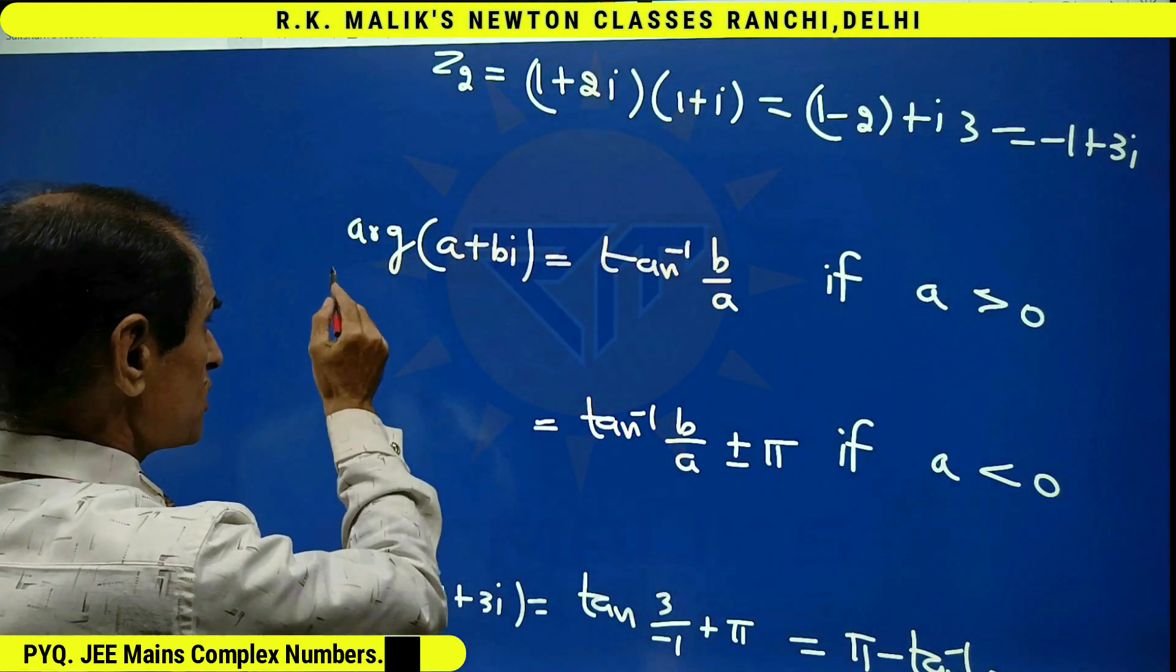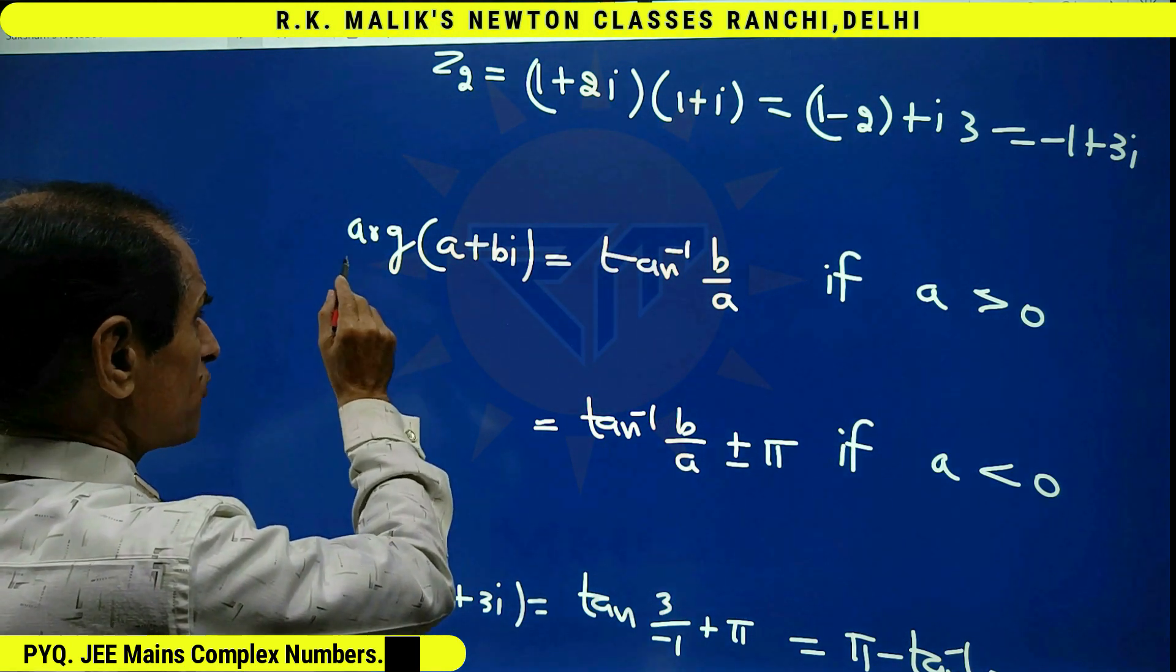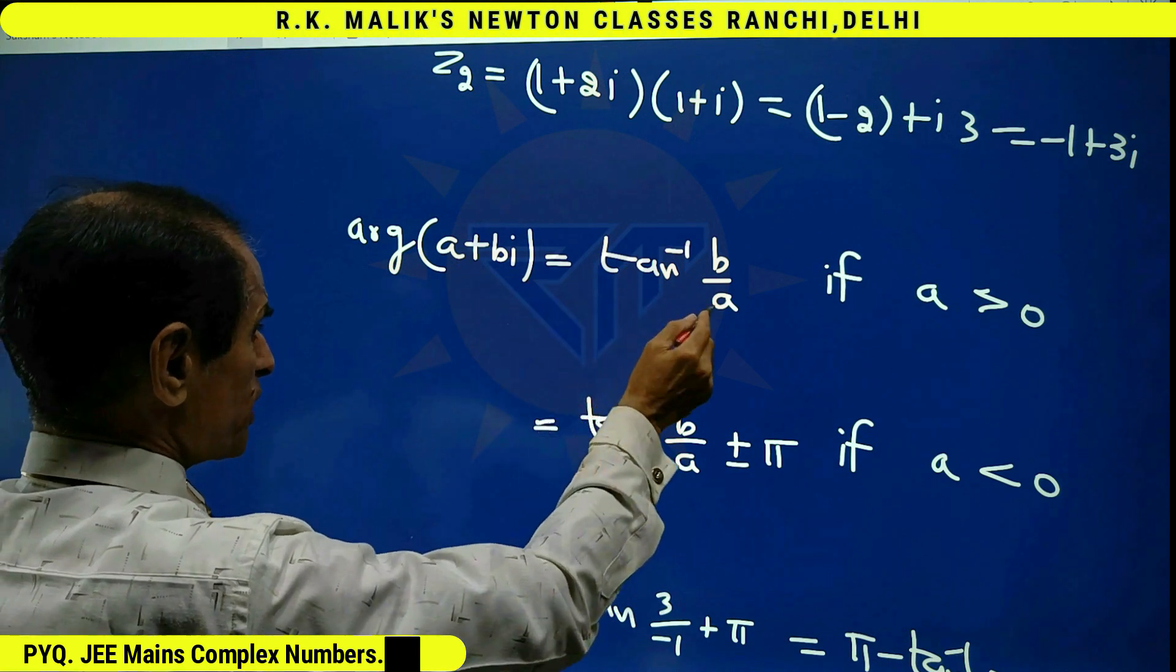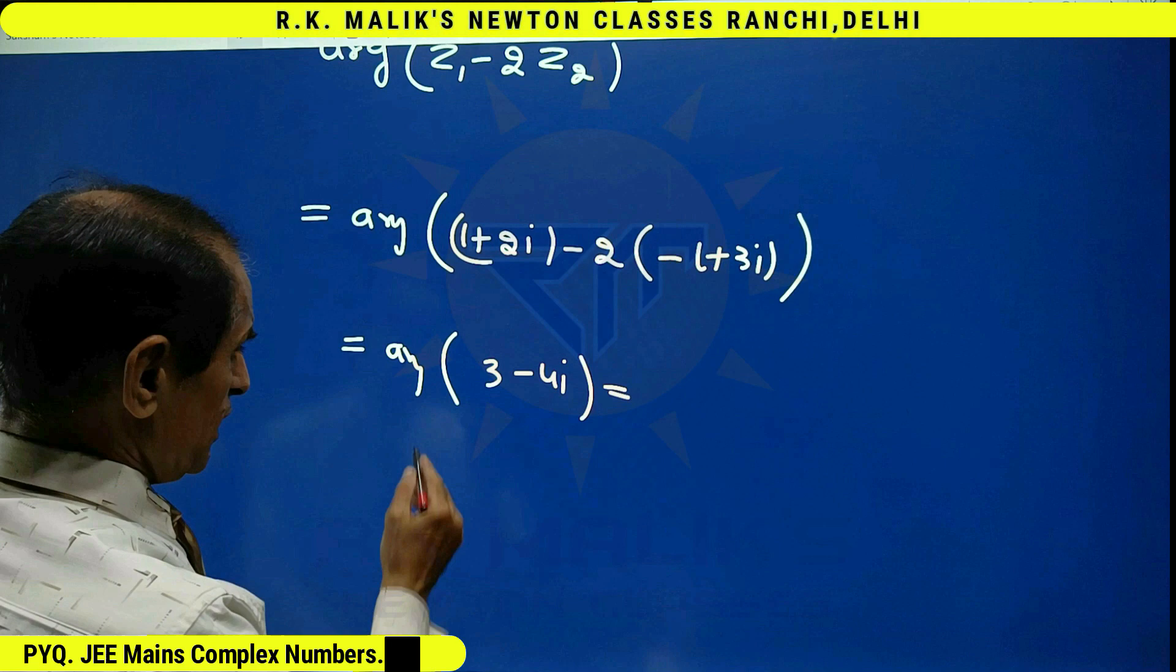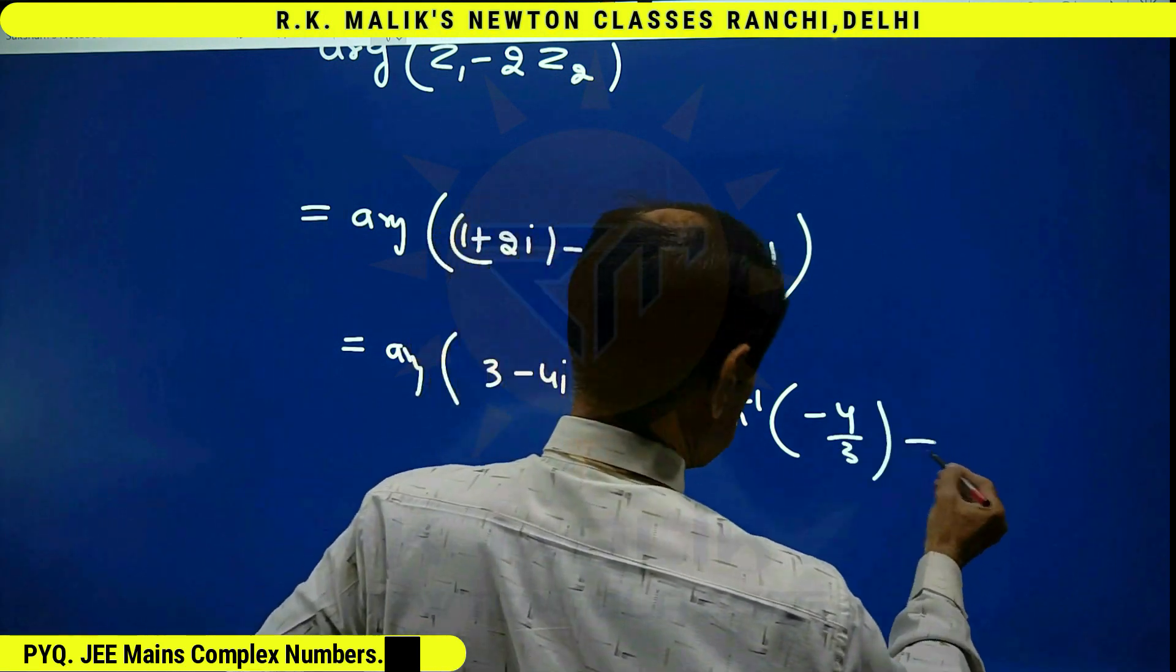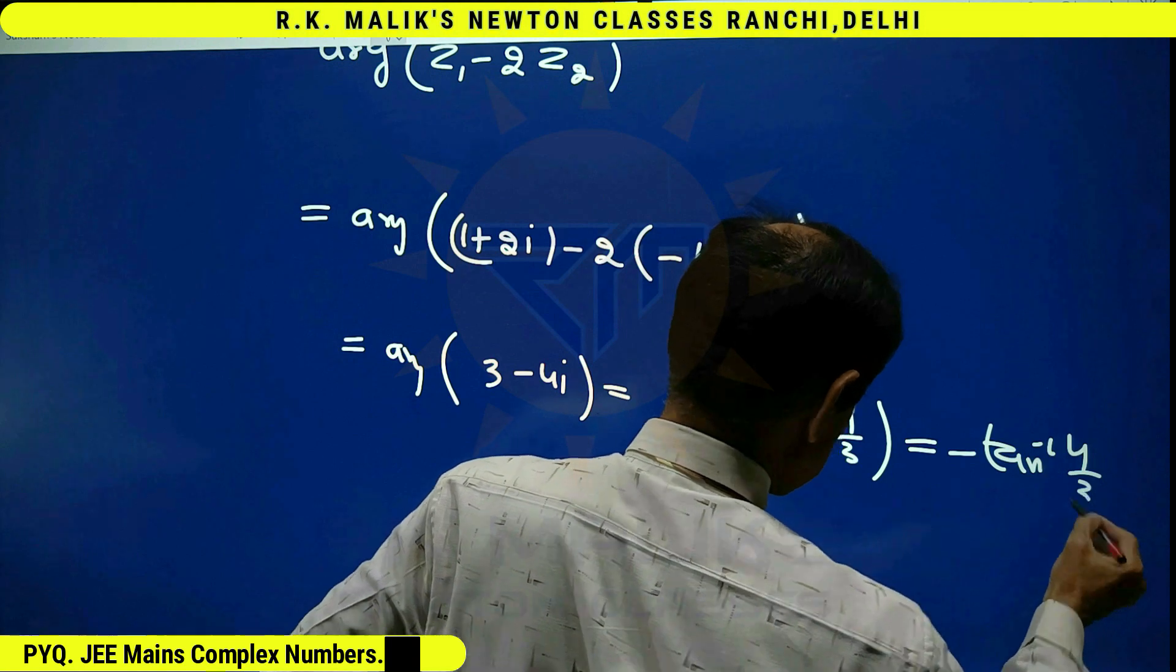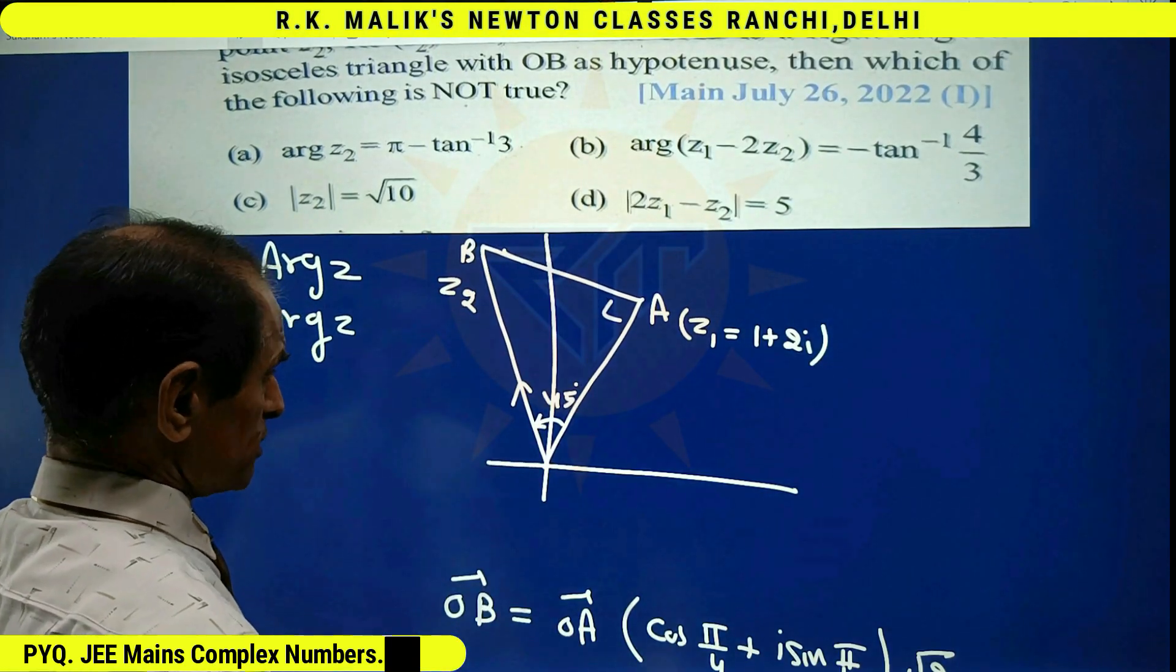And just now I told you, recall that when he has written small 'a', it automatically means he wants principal argument. And it is tan inverse (b/a) if a is positive. And here a is positive. Therefore, I get the answer tan inverse (-4/3). Hence, information of choice B is also correct.